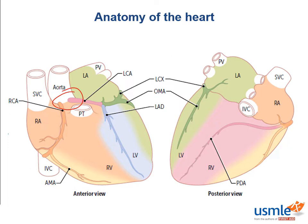The right coronary artery comes from the right side of the aorta and the left main coronary artery comes from the left side, not surprisingly. The left main coronary artery then passes between the pulmonary trunk and the left atrial appendage and then divides into the left circumflex and the left anterior descending.